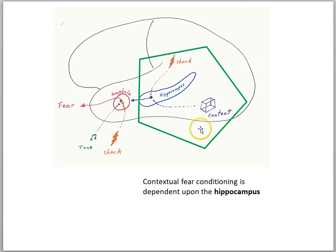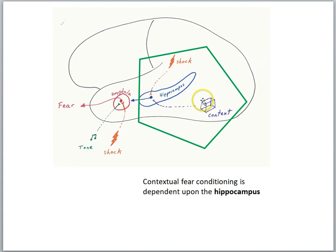There is evidence that the hippocampus is critical for this type of learning. Damage to the hippocampus tends to abolish the association of a context with a shock, so the animal no longer shows fear to the training chamber.